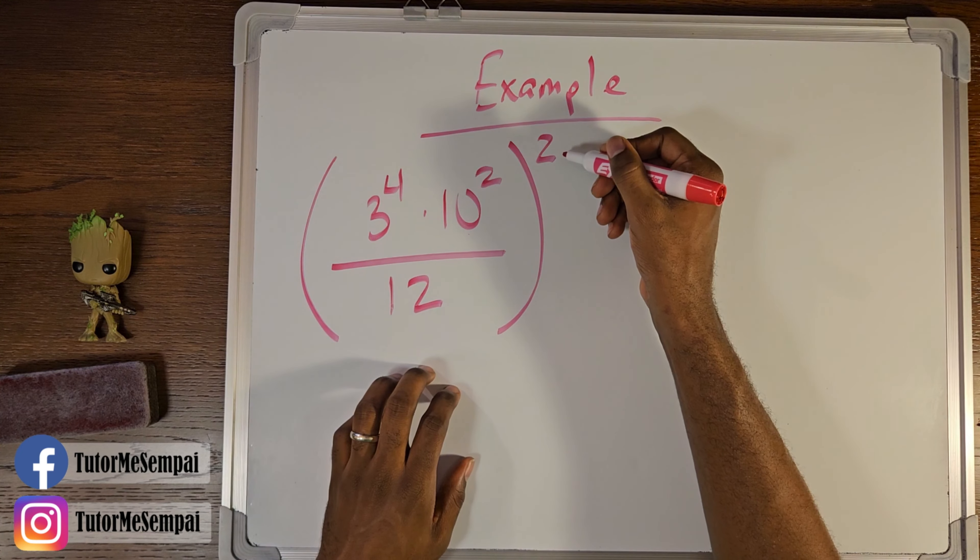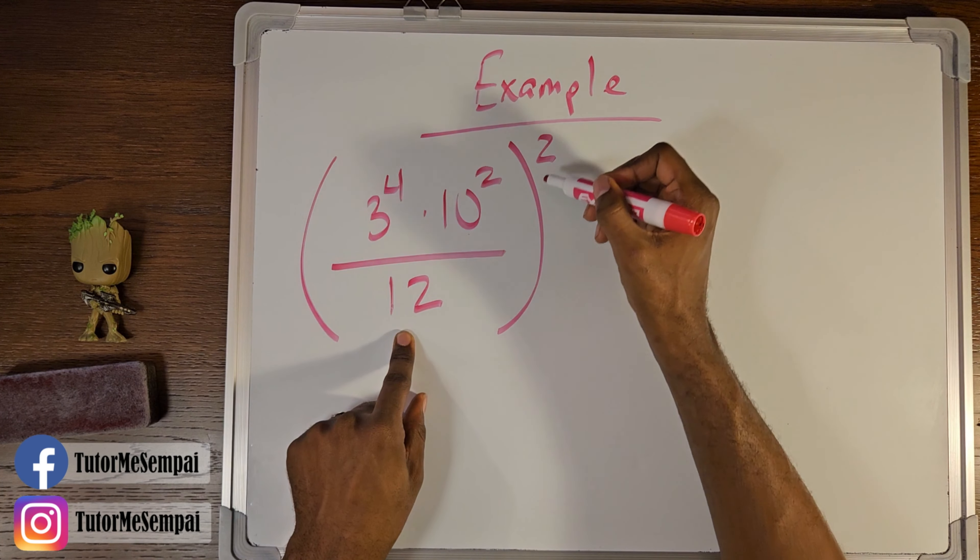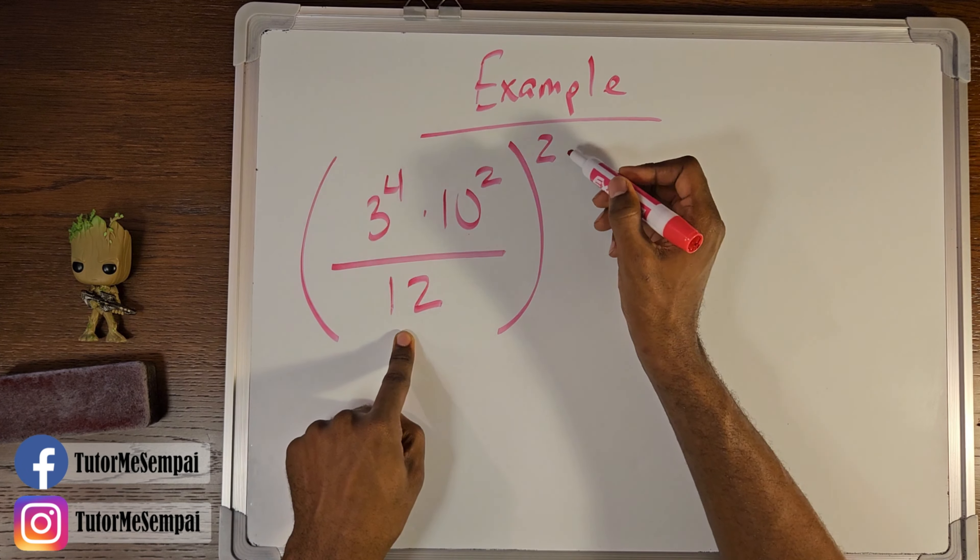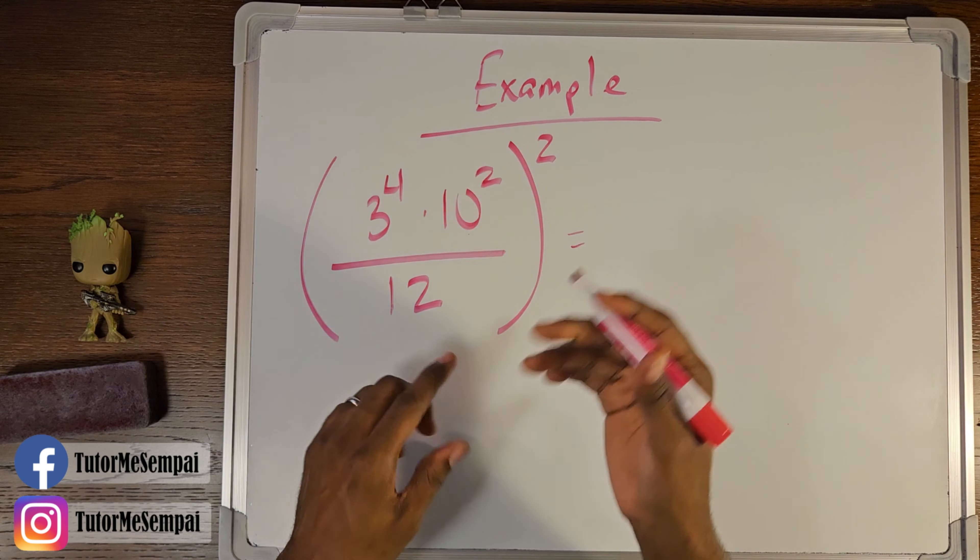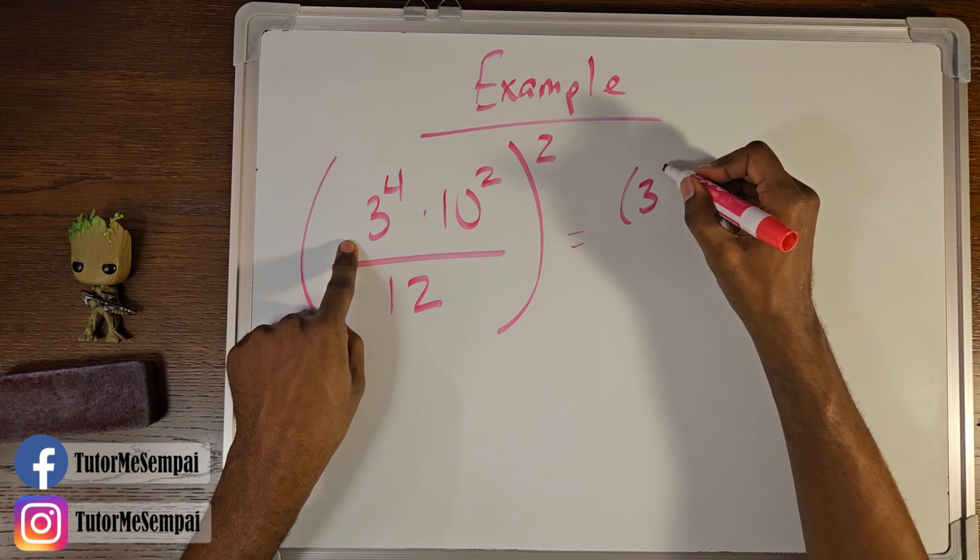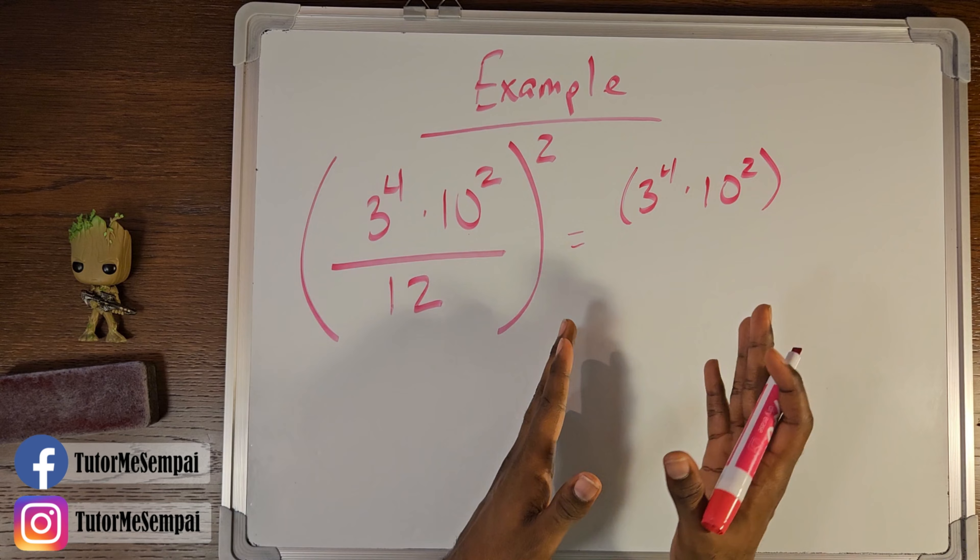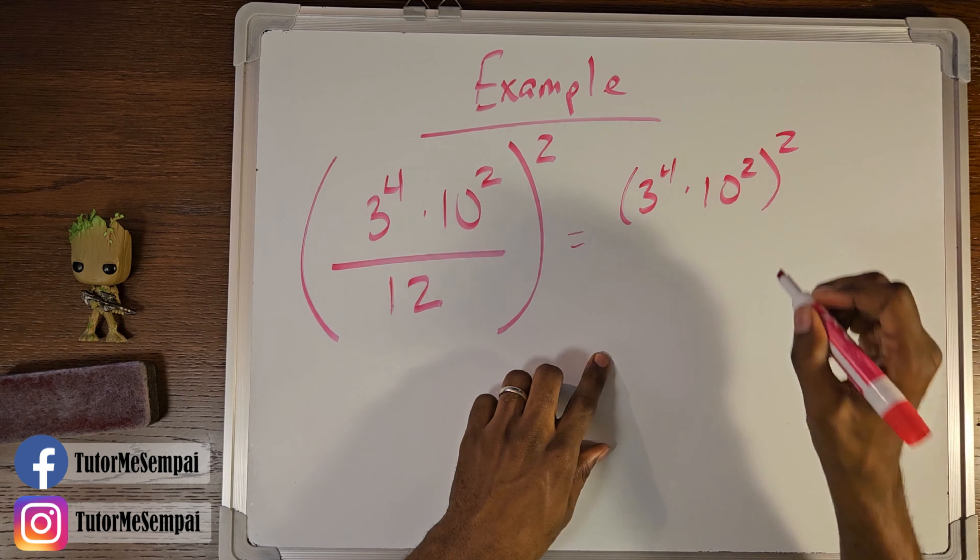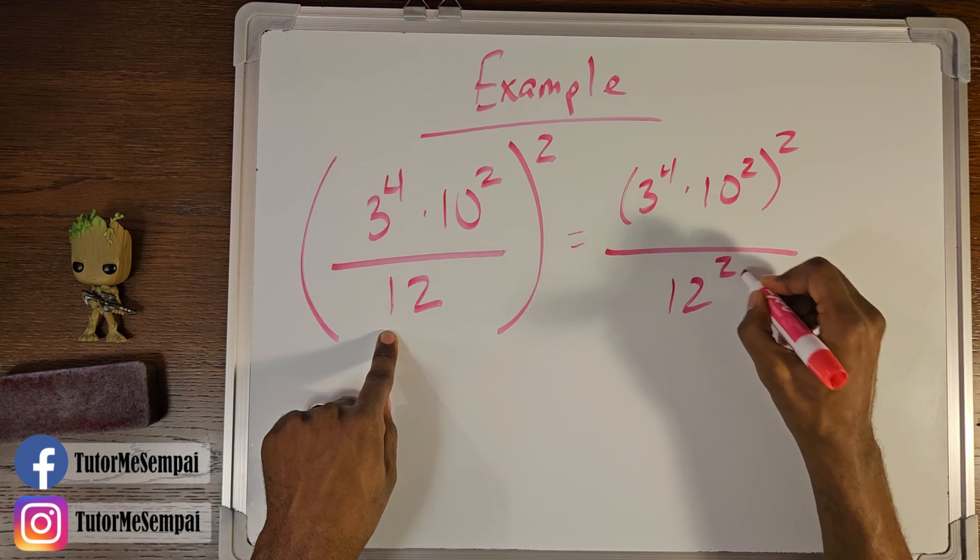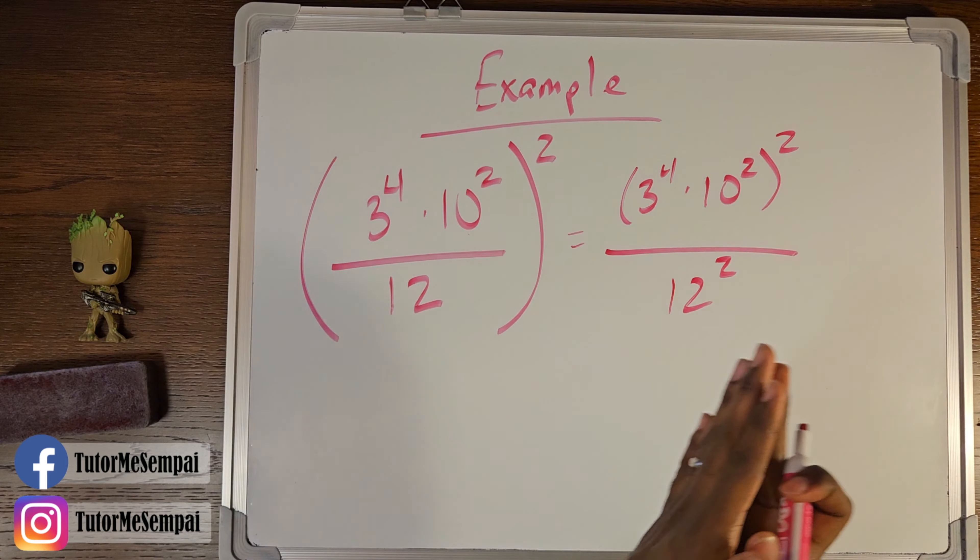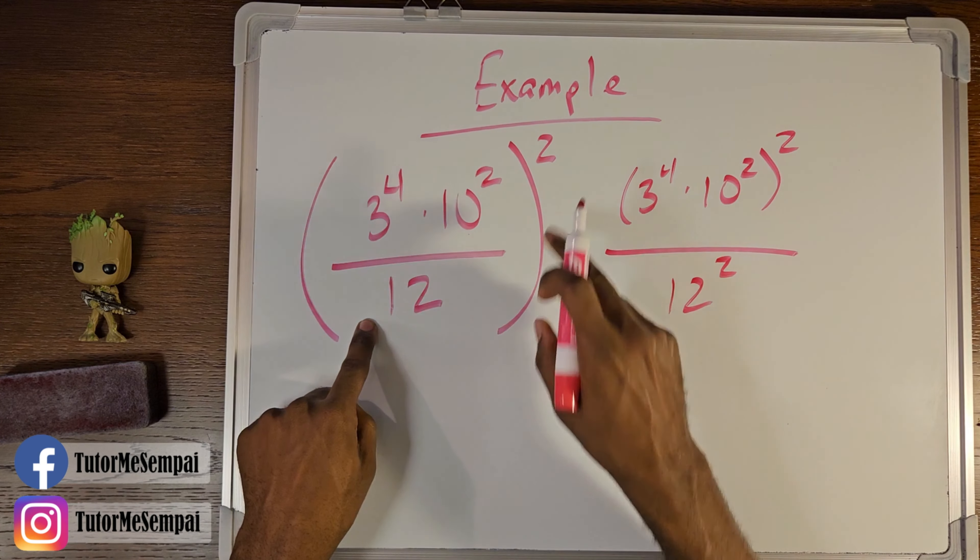Well, we just said whatever's inside your fraction is going to have the top and the bottom raised to this exponent. So let's do that. Let's first go there and write out what that means. So we have our top, our numerator, being three to the fourth times 10 squared. Now you can multiply all that out, but let's just wait, and we're going to raise that to the second power. And we're going to do the same thing for our denominator, so that's 12 raised to the second power. That was our first step that we talked about in our previous example. You take the exponent, you raise the numerator to the exponent, you raise the denominator to the exponent.